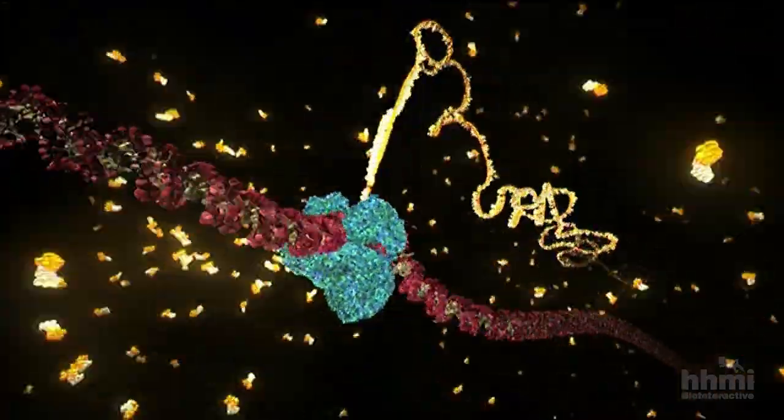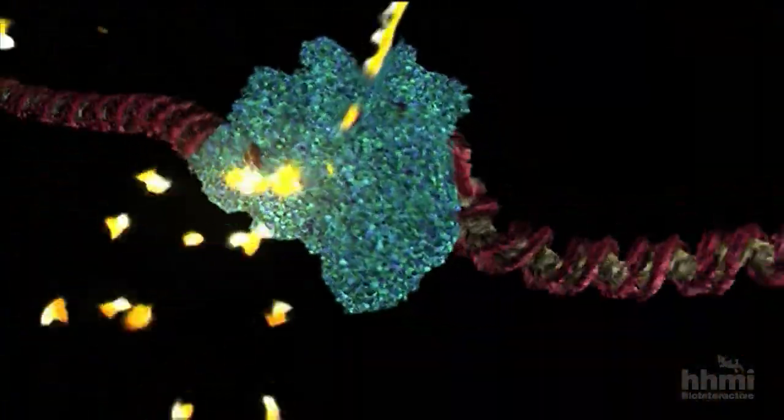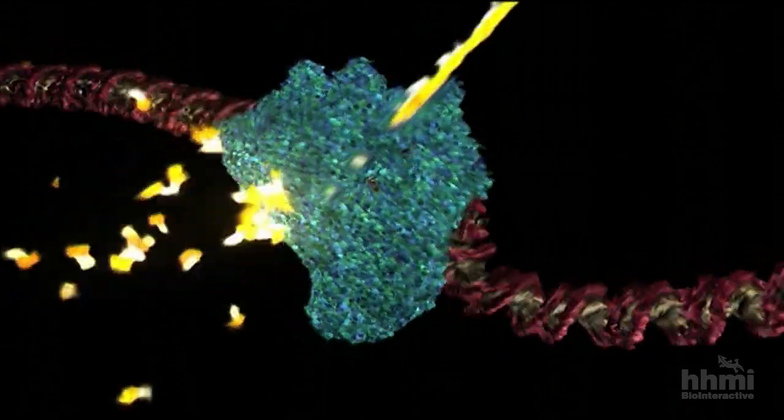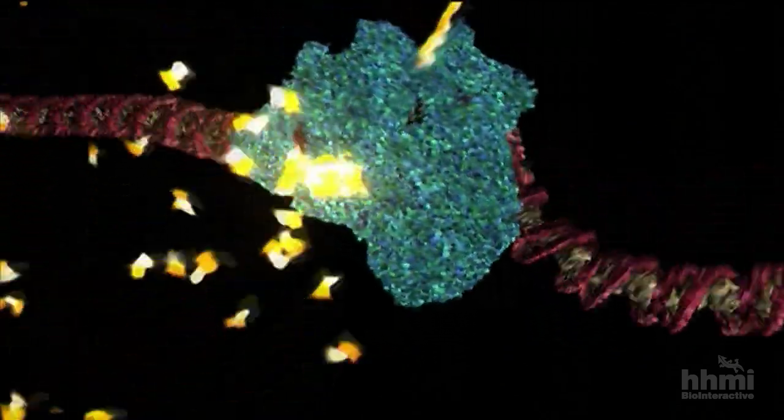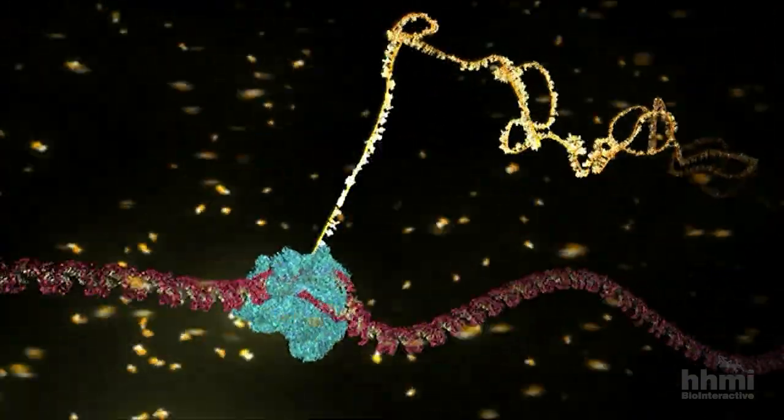The subunits can be seen here entering the enzyme through its intake hole, and they are joined together to form the long messenger RNA chain snaking out of the top.